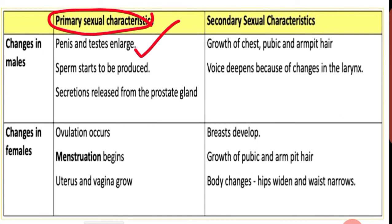In males, the primary sexual characters are: the penis and testis enlarge. The penis is an external genitalia and the testis is the primary sex organ — it gets enlarged. Sperm production starts in the testis. Secretions are released from the prostate gland.